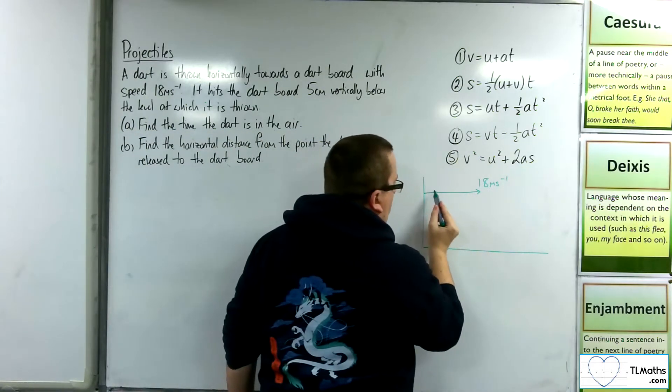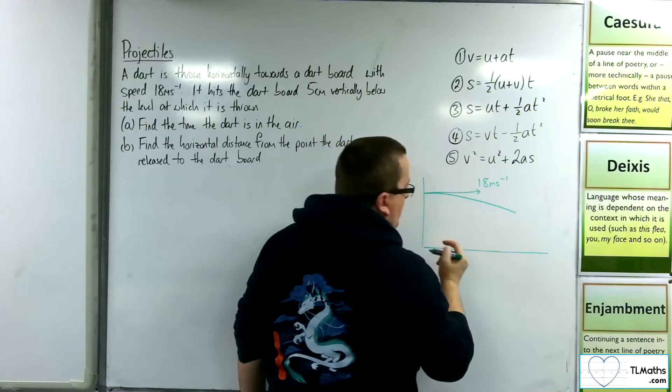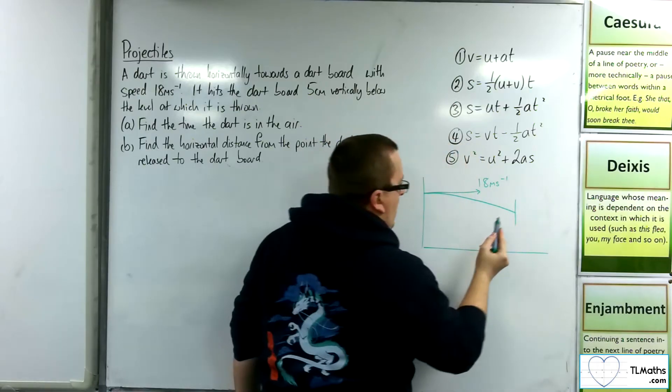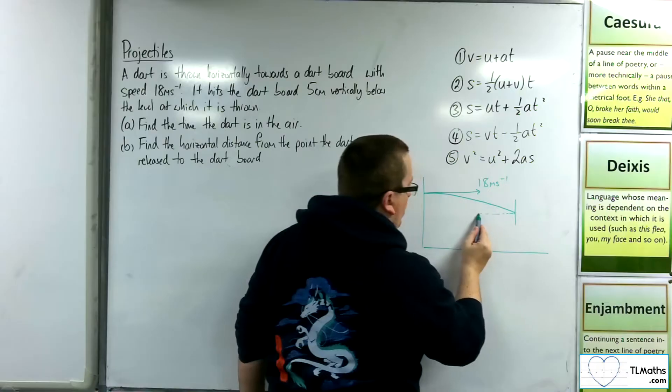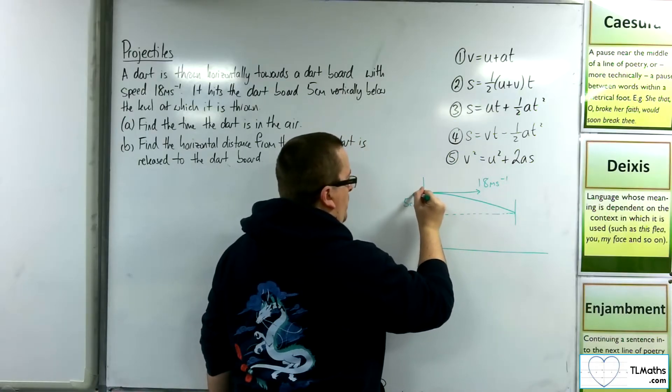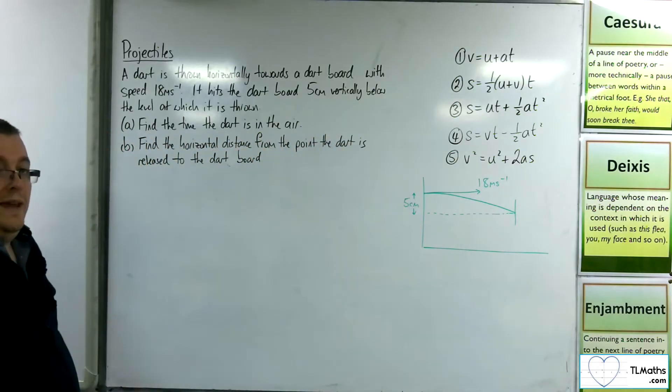And what's going to happen is the dart is going to go something like this, and then it's going to hit the dartboard. And its final position is 5 centimeters below where it started. Okay, so this is the picture that we have.